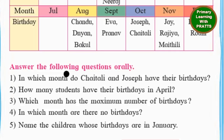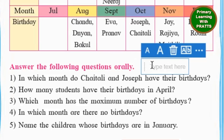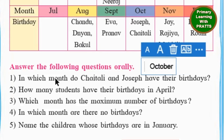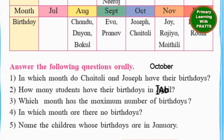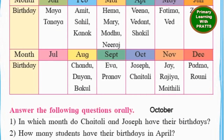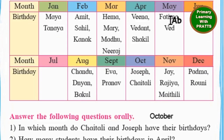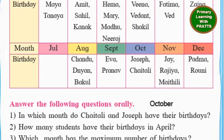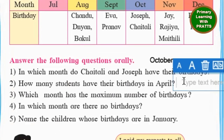Answer the following questions orally - the teacher will ask you and you have to look at the calendar and answer. In which month do Chaitali and Joseph have their birthdays? Chaitali and Joseph have their birthdays in the month of October, so we will write October. Next, how many students have their birthdays in April? Let's go to April and count: 1, 2, 3. So 3 students have their birthdays in April.